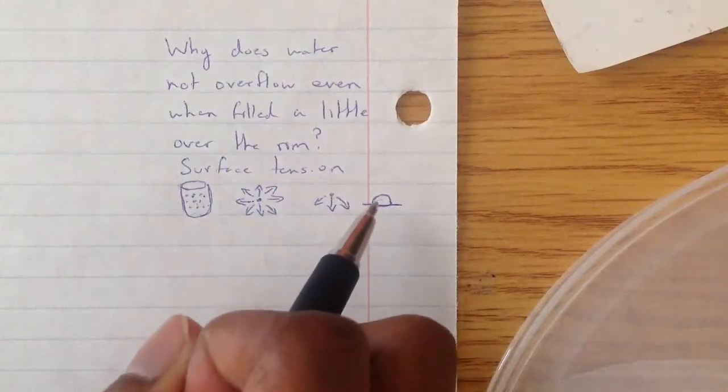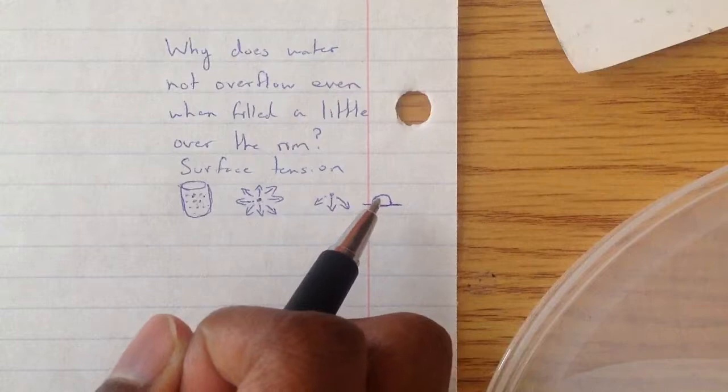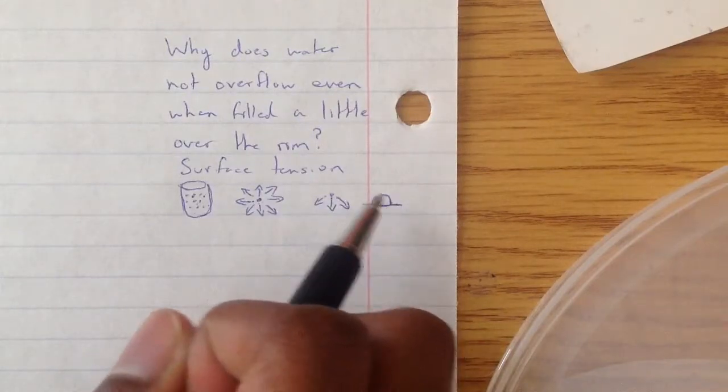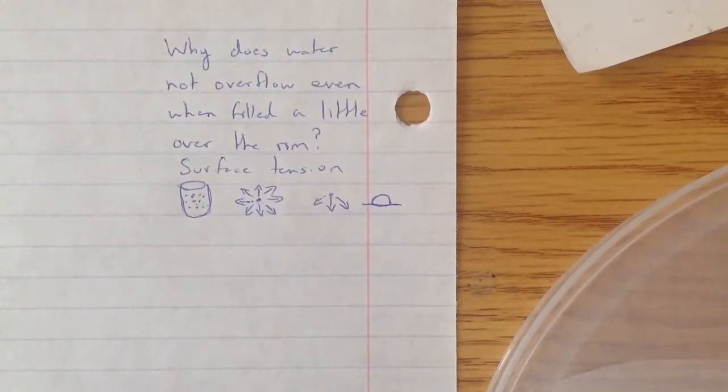Because surface tension is pulling in, letting it actually be elastic at the top. And that's why water does not overflow.